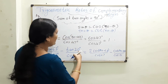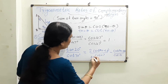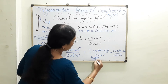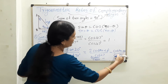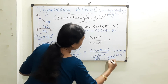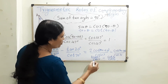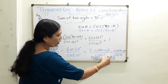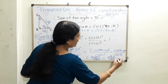Now, 90 minus 63 is 27, so we get cot 27 over cot 27. And 90 minus 20 is 70, so we get cot 70 over cot 70. Therefore the expression becomes 2 times 1 minus 1, which gives us the value 1.